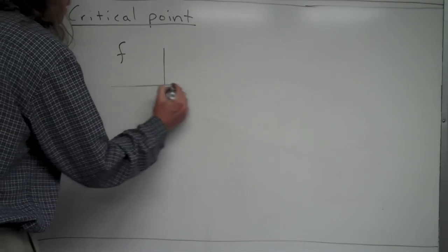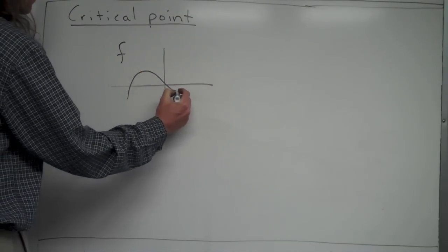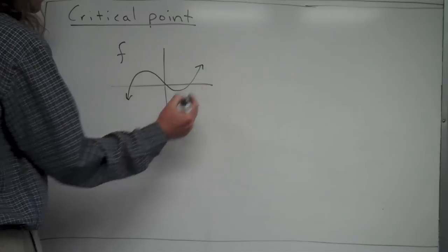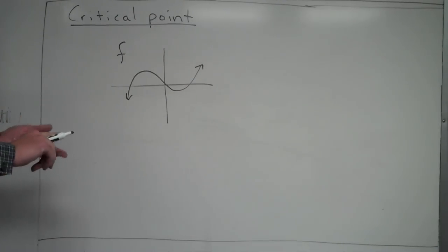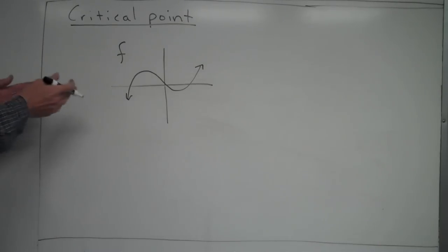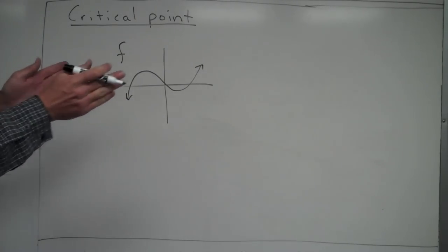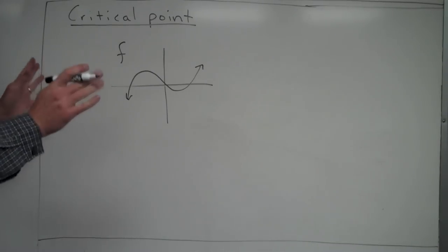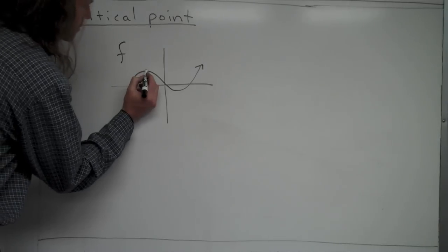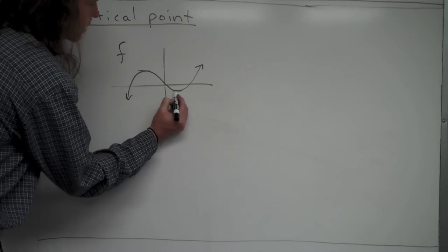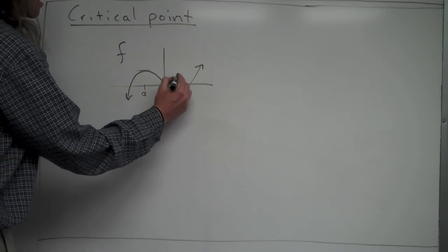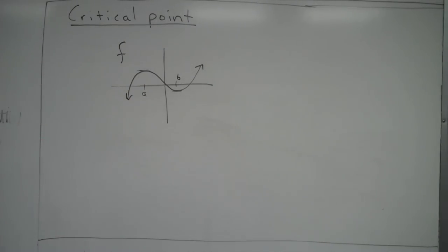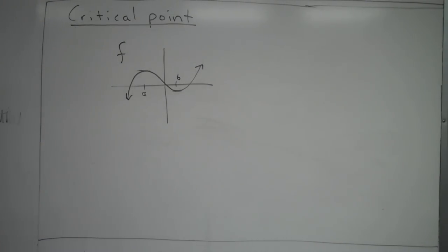If you're looking at a graph of f and asked where it has critical points, you look for where the derivative is 0 or undefined, yet is defined in the original function. If the graph is continuous with no pointy places, the derivative is never undefined. So you look for where the slope is 0. If I see slope of 0 at x = a and x = b, then the graph has critical points at those x values.